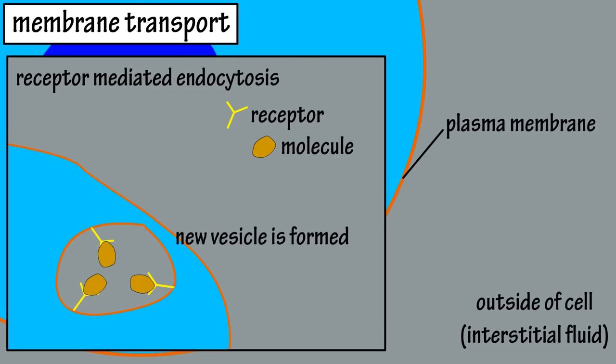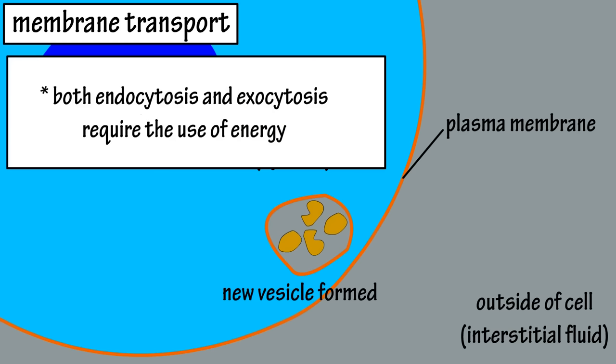One last thing to note: both vesicular transport processes — endocytosis and exocytosis — require energy. And that covers the basics on transport across a membrane.